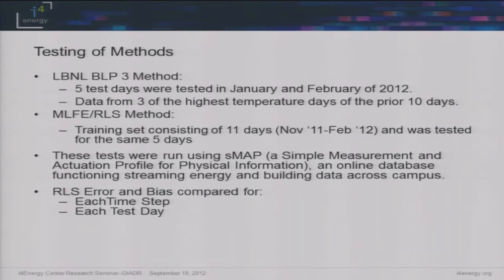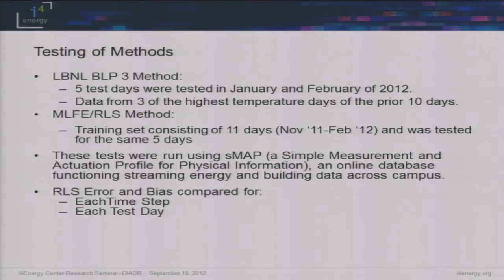For testing these methods, we used five test days in January and February. For the BP3 method, we pulled the three highest temperature days of the previous ten for each of those days. For our method, we used a training set of data, making sure the training sets didn't overlap with the test days. We used SMAP — as Dave Kohler was talking about earlier — to pull data from the server we have running. We then calculated the RMS error and bias and compared them for each time step on each test day.